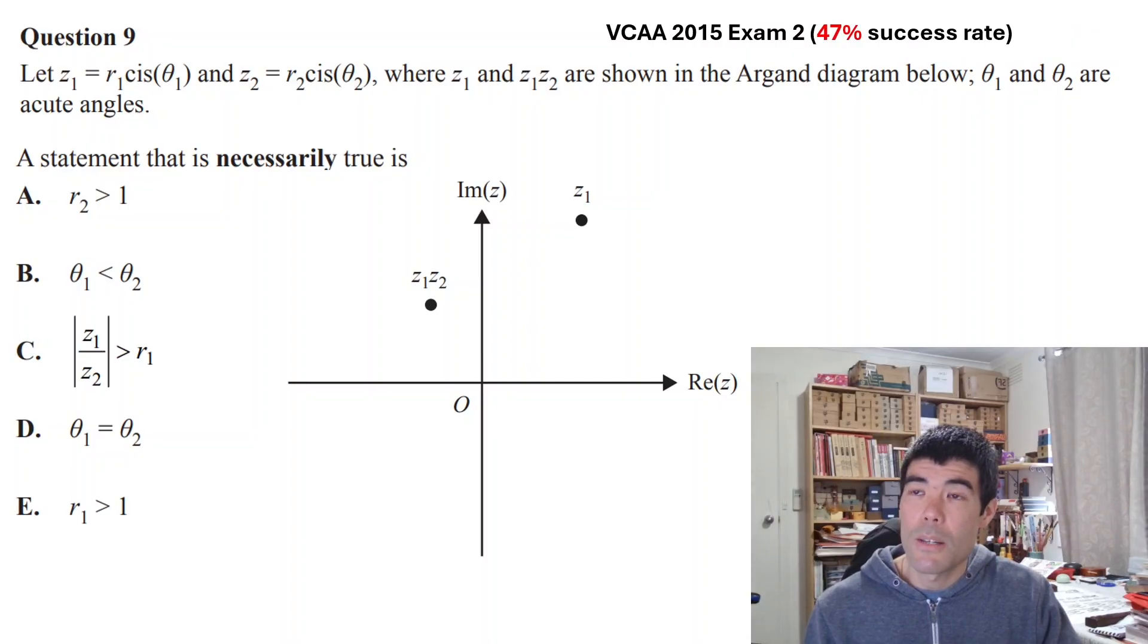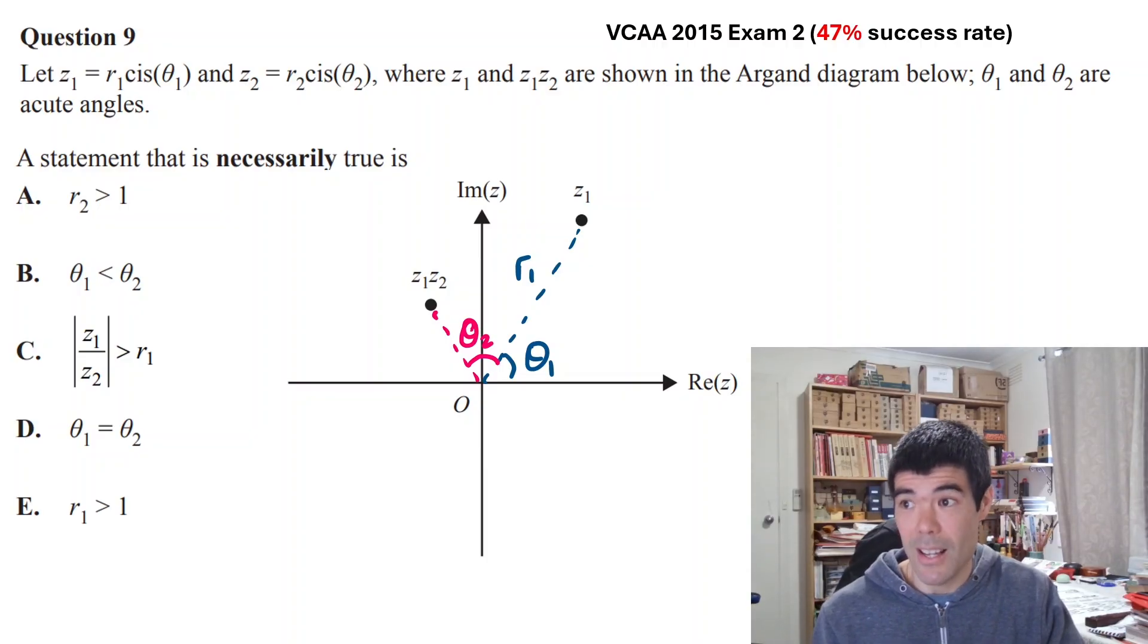So here, this one was from 2015 with a 47% success rate. I actually really like this question. So we've got complex numbers z1 and z2 in polar form. We've been given z1 and the product z1z2. We want to find which of these statements must be true. So if we just add onto our diagram the length r1 and the angle θ1, we don't really know anything about these. From the product z1z2, we know that when we multiply complex numbers, we add the angles. So the angle θ2 is going to be about that size there. But we don't exactly know is θ1 less than θ2 or are they equal? It's a bit hard to see from the diagram. So we couldn't say that either b or d would have to be true.